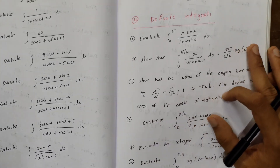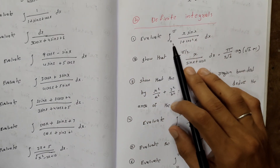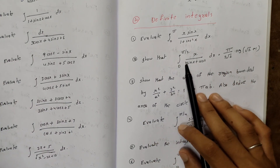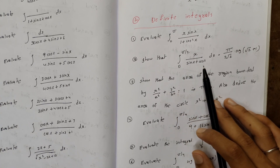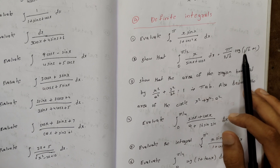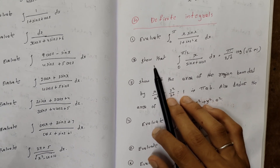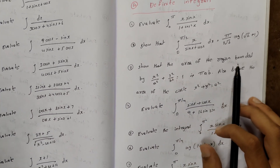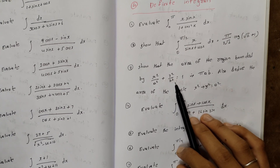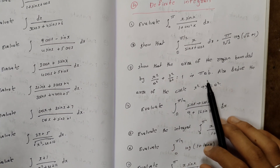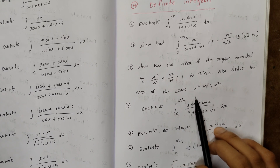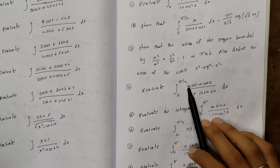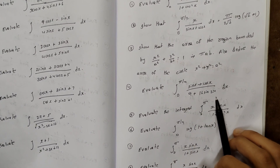Definite integrals: Evaluate ∫₀^π x·sinx/(1+cos²x) dx. Show that ∫₀^(π/2) x/(sinx+cosx) dx = (π/(2√2))·log(√2+1). This is very important and repeated 4 times in previous year question papers. Show that the area of the region bounded by x²/a²+y²/b²=1 is πab, and deduce the area of the circle x²+y²=a².